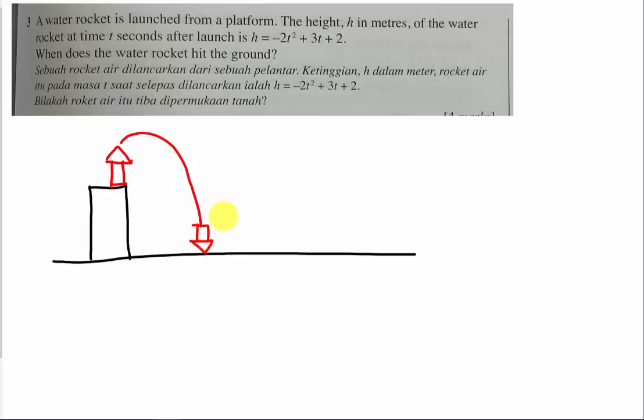So this is what happened, and then the whole process is he recorded down and then he have this information which is h equals to negative 2t square plus 3t plus 2. Alright, so yes, so the question asks you when does the water rocket actually hit the ground? So what happened is the question wants to find when actually the water rocket will hit the ground. They want to find the time.